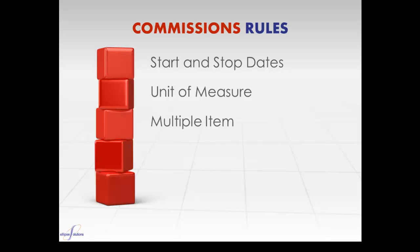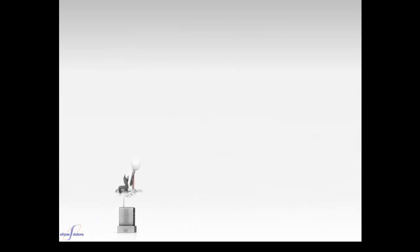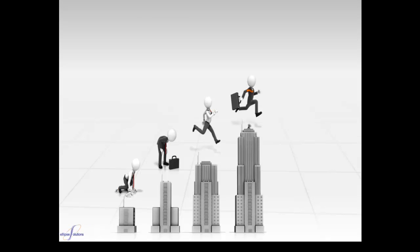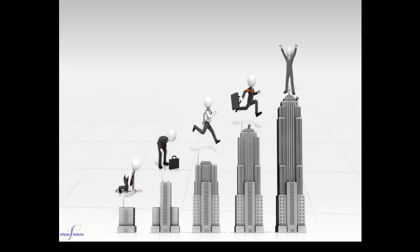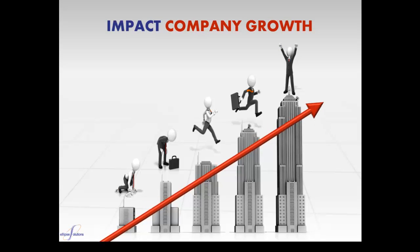Each rule can have multiple item and customer associations and can be grouped to further streamline the setup and administration time. Rules can be issued by unit or revenue volume and can have commission tiers that allow for increased compensation as the sales volume increases. Increasing the level of compensation as higher minimums are reached can help drive sales revenue and directly impact your company's growth.